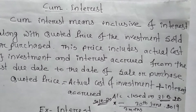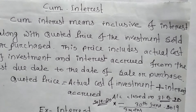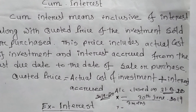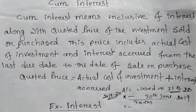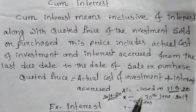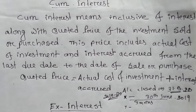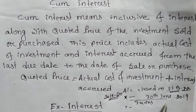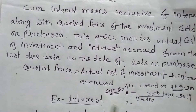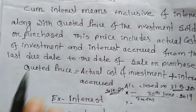So cum interest means the quoted price of securities which includes both the actual price of the investment as well as the interest from the last due date to the date of purchase or sale. For example, suppose the actual price of the investment is rupees 10,000. The last due date is 31st March 2019, and it is sold on 30th June 2019 — so the difference is three months. Interest for those three months will also be included with the actual cost of the investment, and that will be called cum interest.